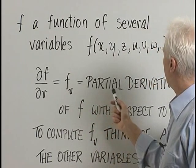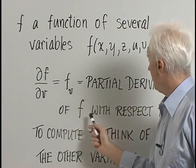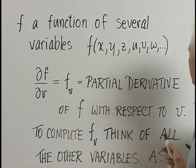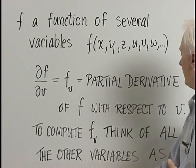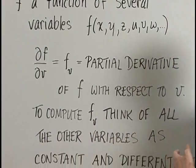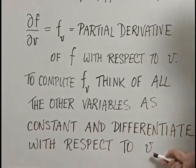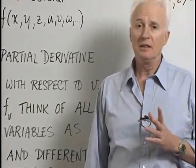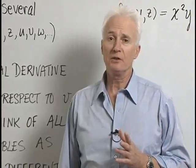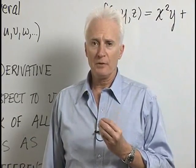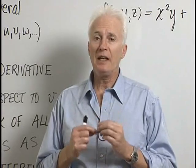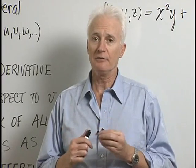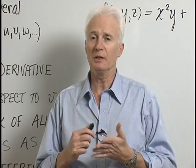This is our notation for the partial derivative of f with respect to v. To compute f sub v, we think of all the other variables as constant and differentiate with respect to v. No matter how many variables appear, concentrate on v and treat everything else as a constant.